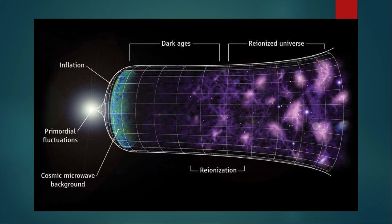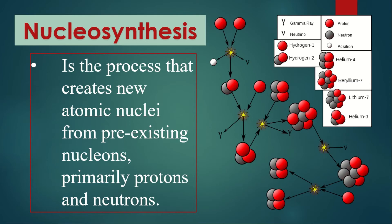Nucleosynthesis is the process that creates new atomic nuclei from pre-existing nucleons — primarily protons and neutrons. As you may recall from chemistry, the nucleus is composed of protons and neutrons. During nucleosynthesis, the nuclei of our atoms are formed — the first nuclei formed were those of hydrogen and helium. As the universe cooled, protons and neutrons fused to form heavier atomic nuclei.